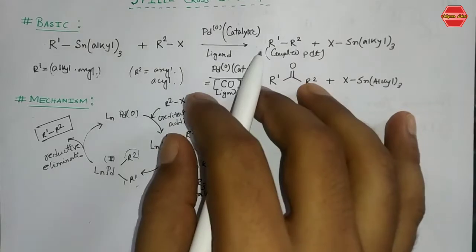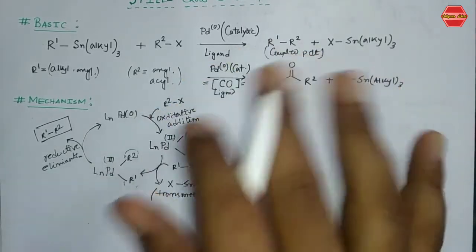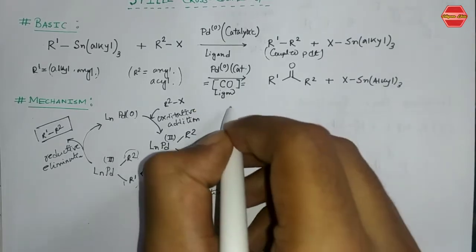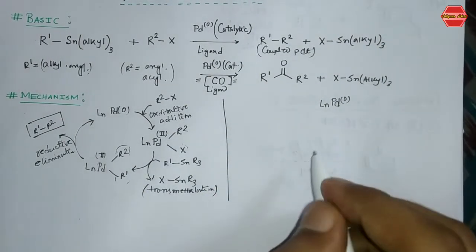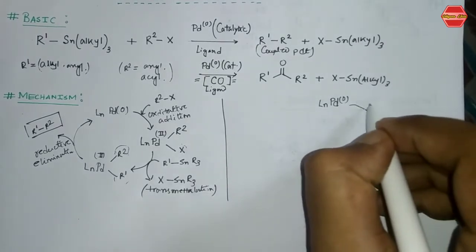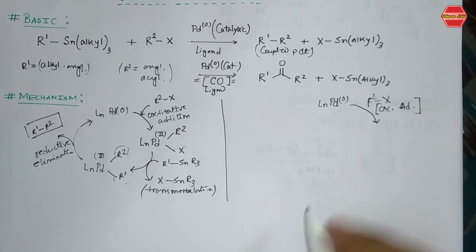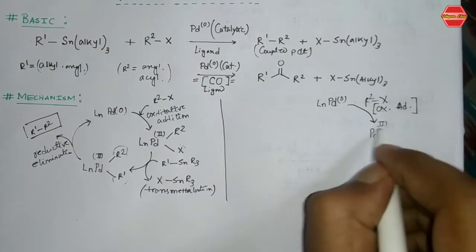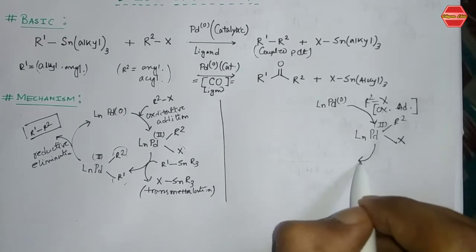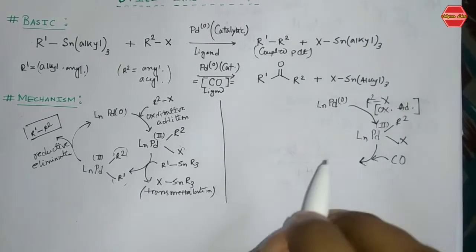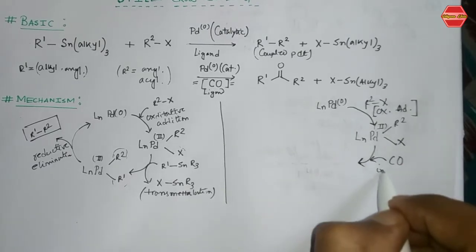Now, what about the Stille carbonylation cross-coupling mechanism? The first step is quite similar: we use Pd(0) with the ligand, and R2X undergoes oxidative addition. After oxidative addition, palladium is in the +2 oxidation state with R2 and X attached along with Ln. Now we have to introduce carbon monoxide — this is the insertion step.